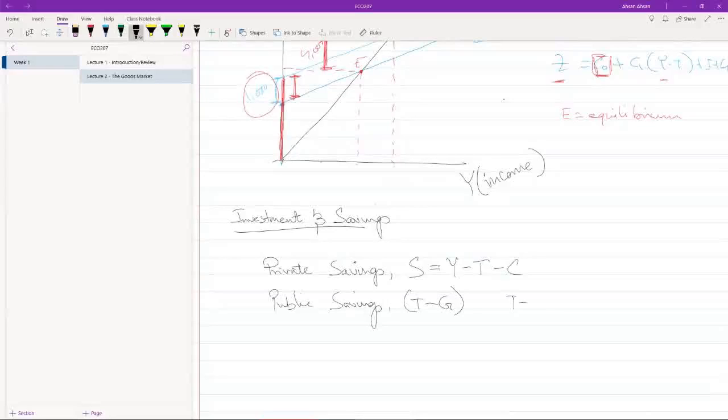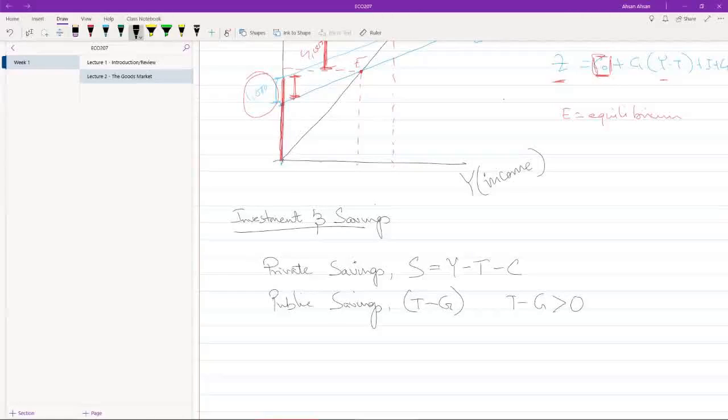When T minus G is more than zero, so government's revenue is more than government's expenditure, there is a budget surplus. And whenever T minus G is less than zero, which means government's revenue is less than its expenditure, we have a budget deficit.